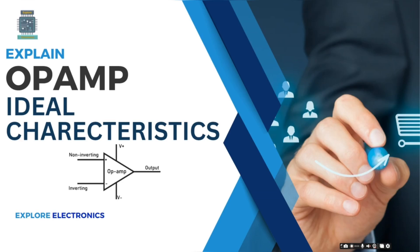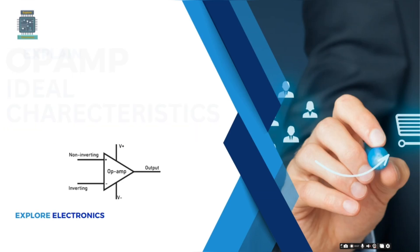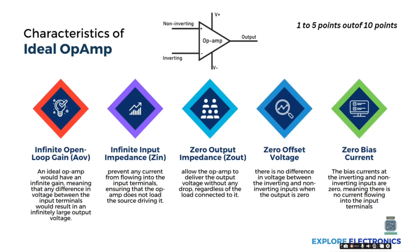Hey guys, welcome back to Explore Electronics. In this video, let's understand op-amp ideal characteristics. Basically, an op-amp will be having two input terminals — inverting and non-inverting input terminals — and a single output.